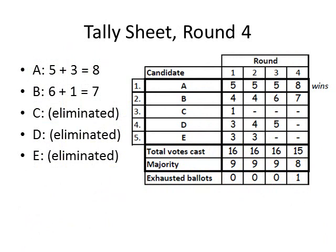The ballots below the sticky notes are counted and added to the number in the previous column of the tally sheet. A received three additional votes — 5 plus 3 is 8. B received one additional vote — 6 plus 1 is 7. The votes are totaled and a majority is computed. This time, the number of votes cast is 15, and the majority is 8. Candidate A received a majority of the votes cast and is the winner of the first seat.